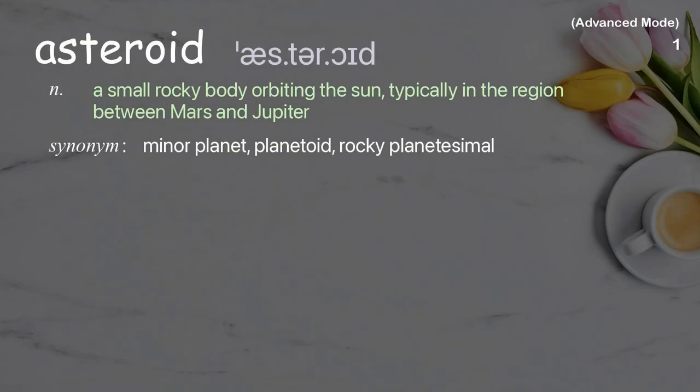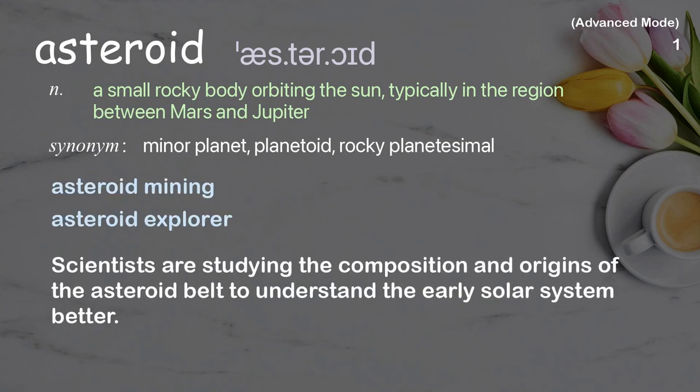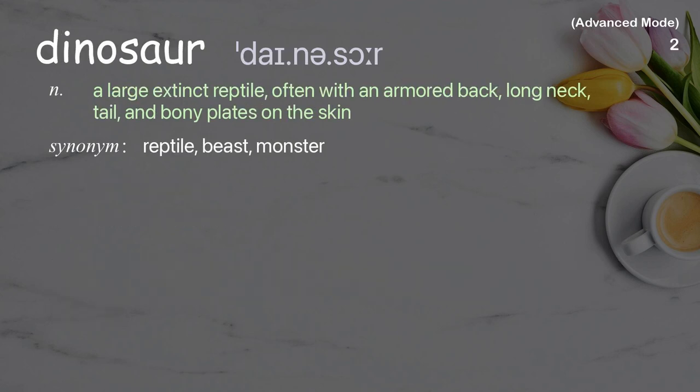Asteroid: a small rocky body orbiting the sun, typically in the region between Mars and Jupiter. Examples: asteroid mining, asteroid explorer. Scientists are studying the composition and origins of the asteroid belt to understand the early solar system better.